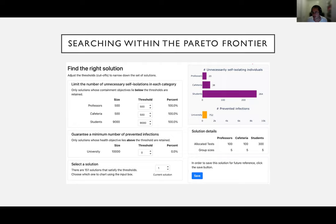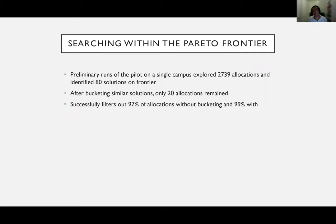For the final step of the pipeline, we help them search within the Pareto frontier for specific allocations. We have a web app they use locally to explore and visualize trade-offs — much like the toy example — where they can specify target performance for each objective. A key piece of feedback was that to facilitate decision making, it's ideal to prune this space for users, so we only consider a subset of potential group sizes and bucket solutions of similar performance. In preliminary runs of the pilot on one of their largest campuses, the algorithm explored roughly 3,000 allocations and identified 80 on the frontier; after bucketing, this reduced to 20, vastly reducing the space and greatly helping the decision-making process.